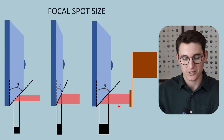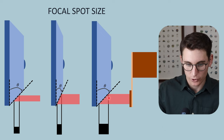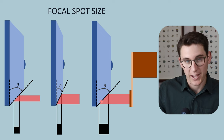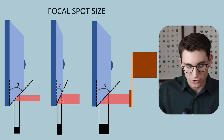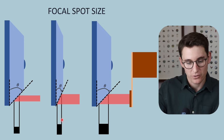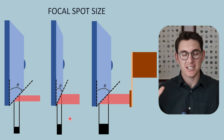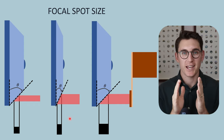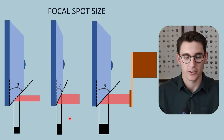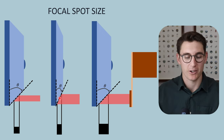Looking at this practically: on the right we have our electron beam making our actual focal spot and giving us our effective focal spot at a specific anode angle. If we take that same electron beam but reduce our anode angle, we can see how we have narrowed our effective focal spot. In a future talk on geometric blurring, you'll see why a small or narrow effective focal spot is important for creating sharp images with good spatial resolution and little geometric blurring.